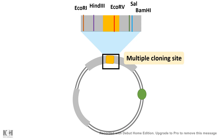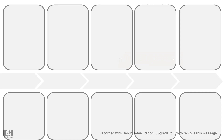The multiple cloning site is where you insert your gene of interest. Because the MCS contains multiple restriction sites, you can cut it with a specific restriction enzyme, cut the gene of interest with the same enzyme, and ligate the gene into the plasmid backbone. The MCS encompasses several different restriction enzymes — some generate sticky ends, some generate blunt ends.